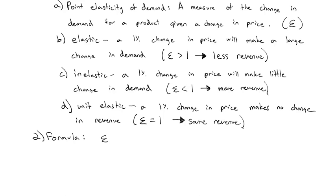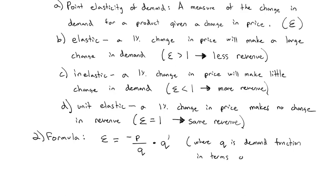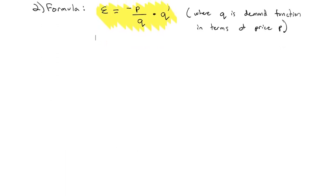To calculate epsilon, the point elasticity of demand, we take the opposite of the price divided by the demand function, times the derivative of the demand with respect to price: ε = -(p/q) × (dq/dp), where q is the demand function in terms of price p. Let's look at examples where we use that equation, calculate epsilon, and interpret whether we're elastic, inelastic, or unit elastic.